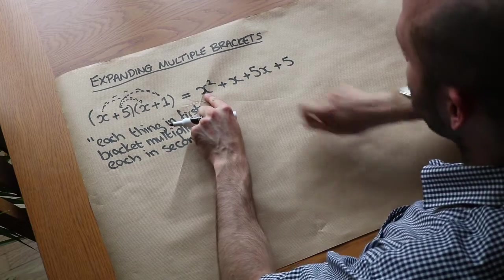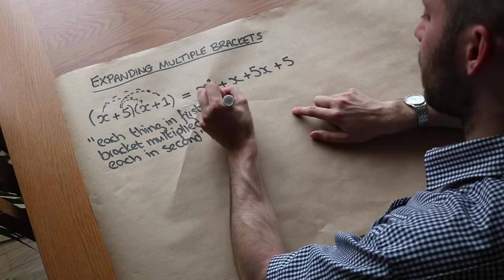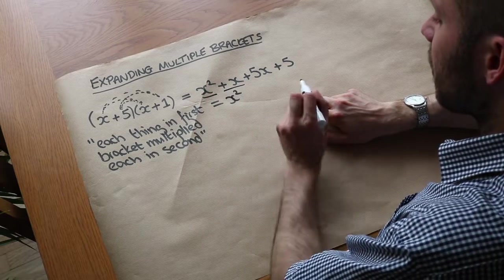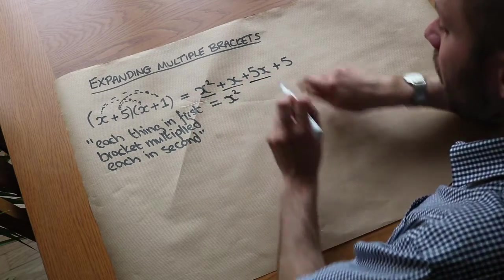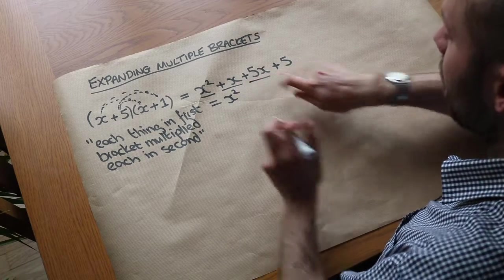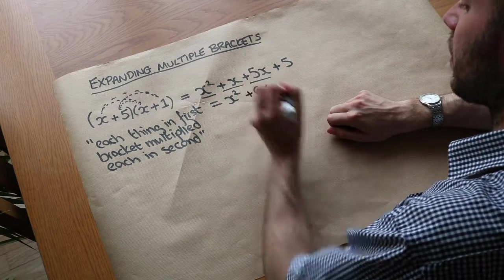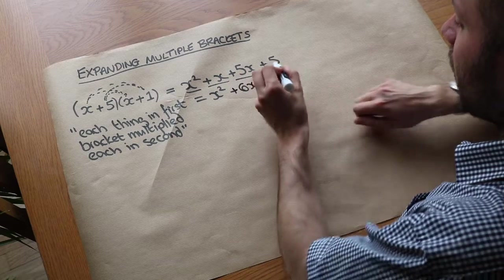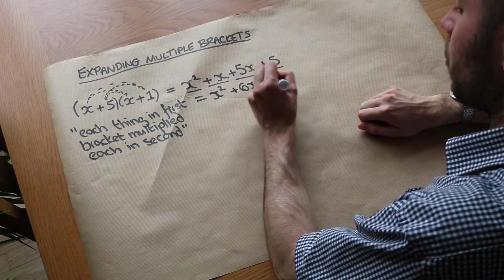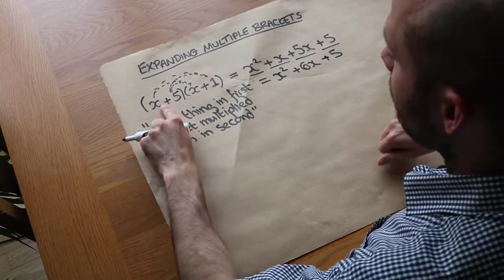Now this can be simplified by collecting like terms. The x squared doesn't collect with anything, so it stays. The plus x term and the plus 5x term collect: 1x plus 5x is plus 6x. And we've got the constant term plus 5, which doesn't collect with anything else.